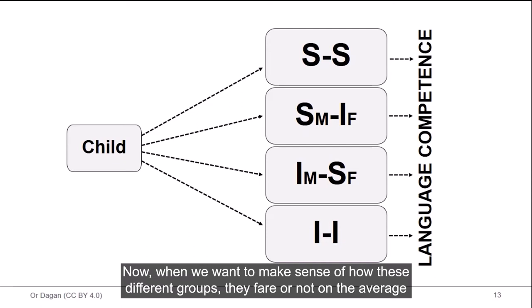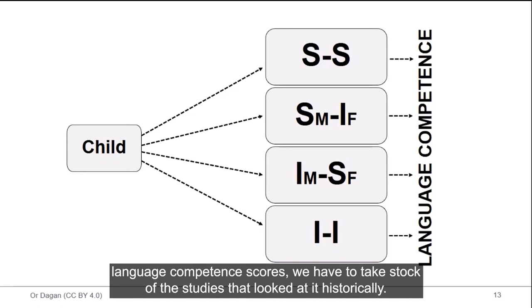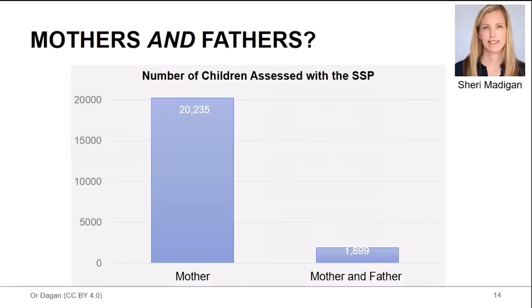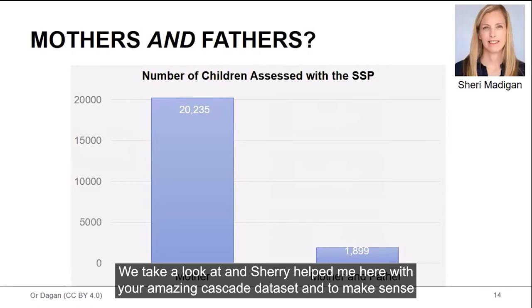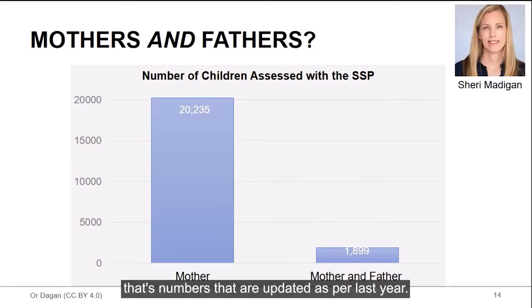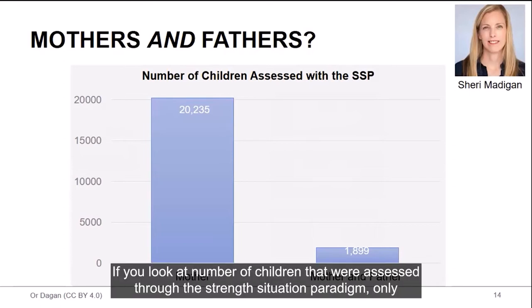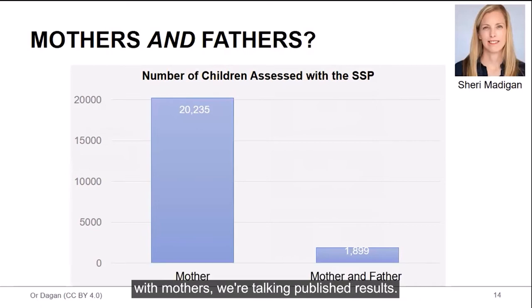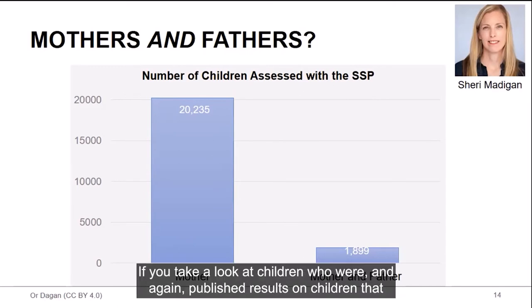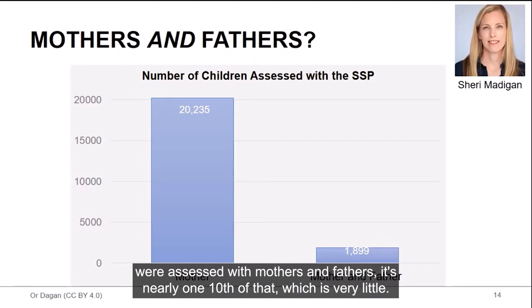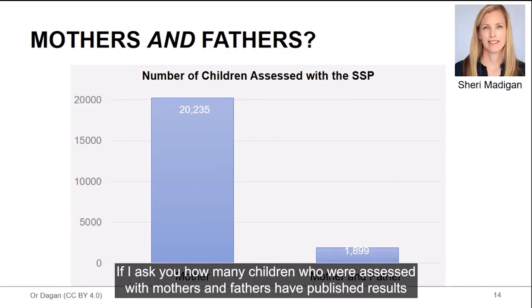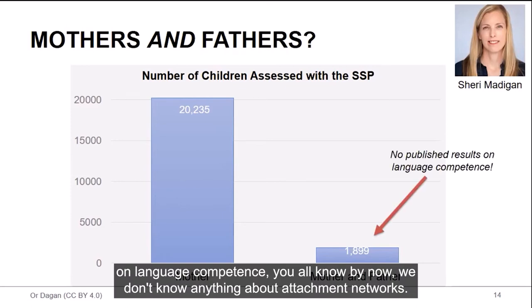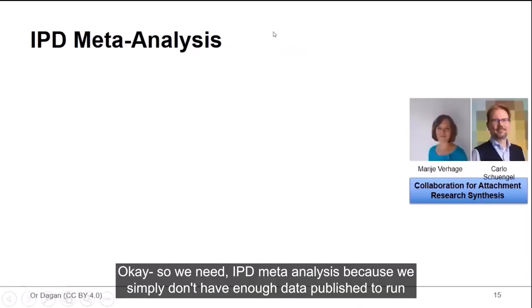Now, when we want to make sense of how these different groups differ or not on the average language competence scores, we have to take stock of the studies that look at it historically. I will take a look at, and Sherry helped me here with your amazing cascade data set. And to make sense, that's numbers that are updated as per last year. So this is just by approximation. If you look at number of children that were assessed through the strange situation paradigm, only with mothers, we're talking published results, we have more than 20,000 children and ongoing. If you take a look at children who were, and again, published results on children that were assessed with mothers and fathers, it's nearly one-tenth of that, which is very little. Now, it becomes even smaller when you look at specific outcomes. If I ask you how many children who were assessed with mothers and fathers have published results on language competence, you'd all know by now. We don't know anything about attachment networks as association with language competence.